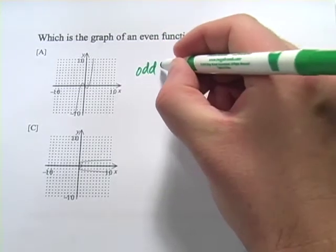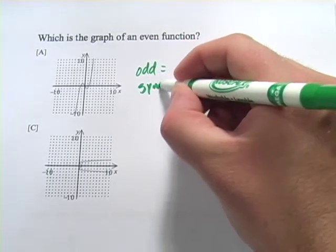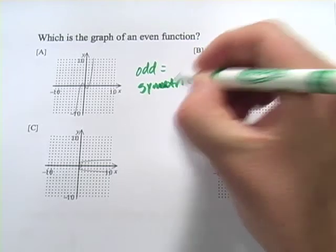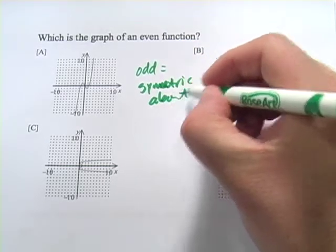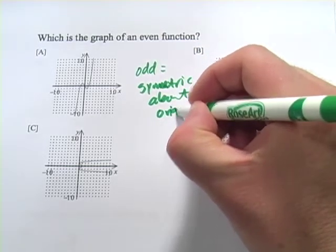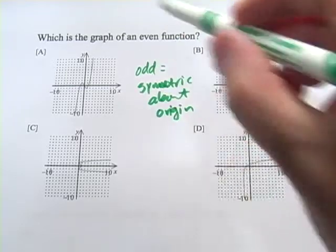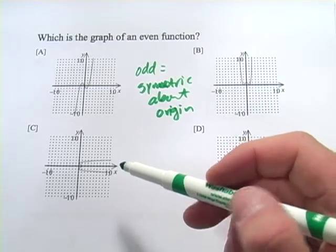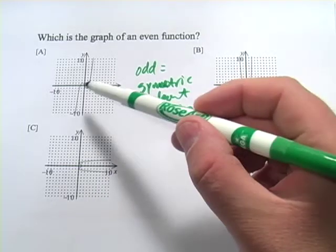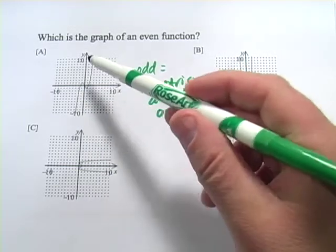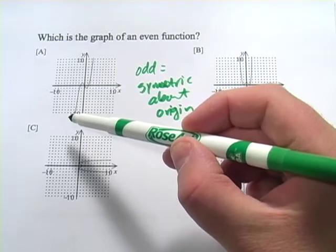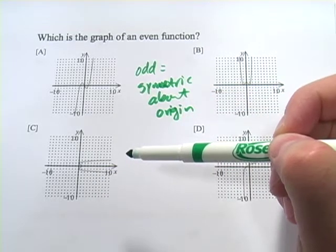So an odd function is symmetric about the origin. So if you were to take a function and spin it around 180 degrees around the origin, it would look like the same thing. And actually, we have one of these right here. This shape right there, if you spun that around the origin 180 degrees, you would get exactly the same thing.